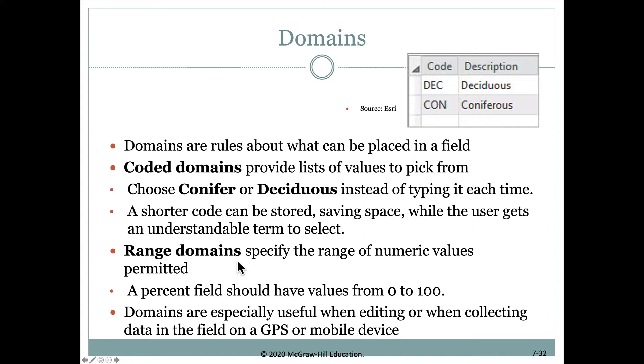Other times we have domain ranges for the values that can be specified. For example, if we're looking at a percentage field—what percent of the area is covered by vegetation—that value would have to be somewhere between zero and a hundred. If someone accidentally typed in 200, it would not allow them to put in that value because it's too high.